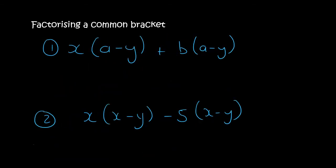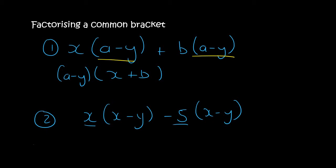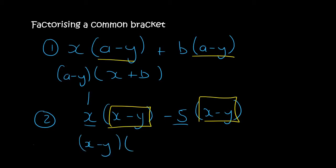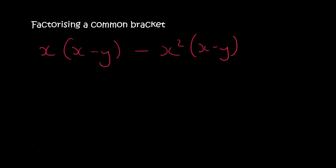Let's practice these now. The common bracket here is a minus y and a minus y, so that's common. You take it out in the front, then you'd be left with x plus b. The common thing here is x minus y and x minus y, so we take that out. Then in the first term you're still left with an x, and you're still left with minus 5.